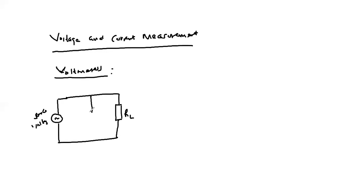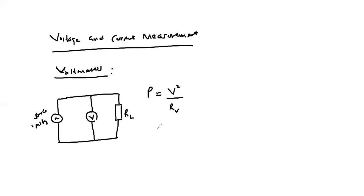The voltmeter is connected in parallel with the load. The power in the voltmeter is given as: power equals V squared over R_V, where V is the voltage indicated by the voltmeter and R_V is the internal resistance of the voltmeter.